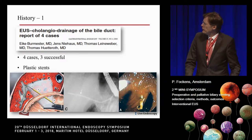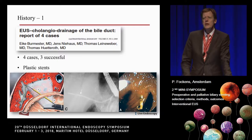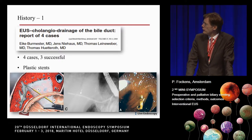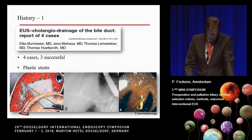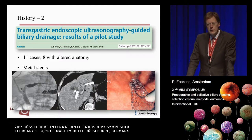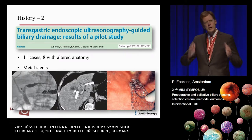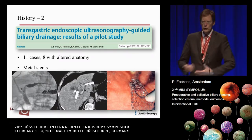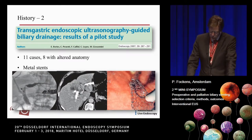Already 14-15 years ago, the group of Mark Giovannini published the first EUS cholangiodrainage of the bile duct through the stomach. They reported four cases; success was in three, and a plastic stent was used. A couple of years later, about 11 years ago, they continued with metal stents in a slightly bigger series of 11 cases — 8 patients with altered anatomy — because if you can't reach the duodenum, it makes most sense to go towards the liver through the stomach. They used metal stents and were quite successful.